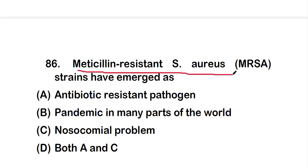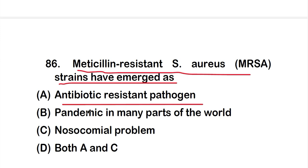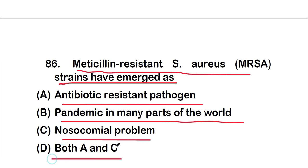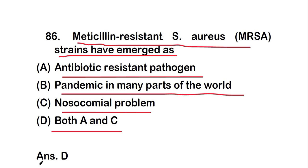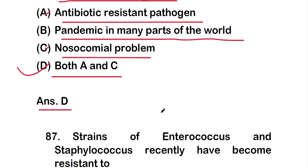Question number 86: Methicillin-resistant Staphylococcus aureus strains have emerged as — option A: antibiotic-resistant pathogen, option B: pandemic in many parts of the world, option C: a nosocomial problem, option D: both A and C. The correct answer is option D — both A and C. MRSA strains are antibiotic-resistant pathogens and also cause nosocomial problems, meaning they can infect hospitalized patients.